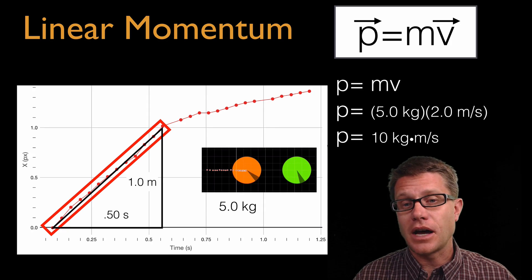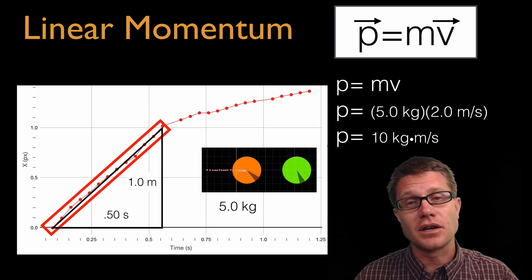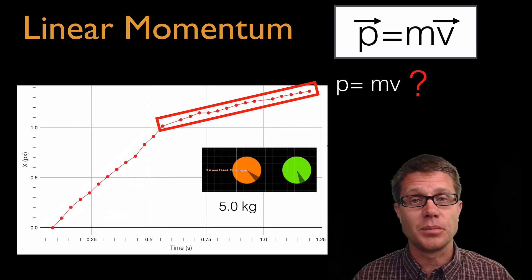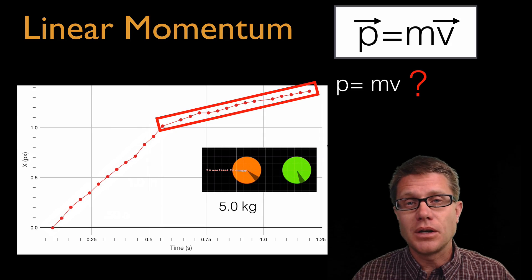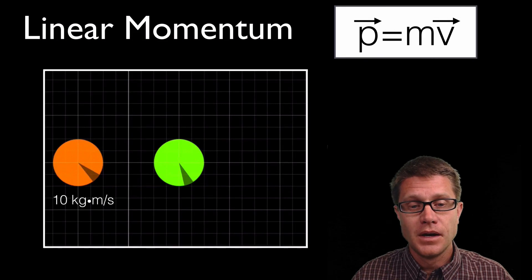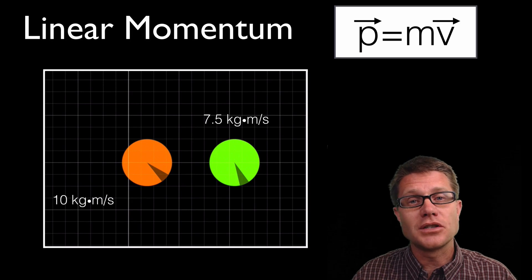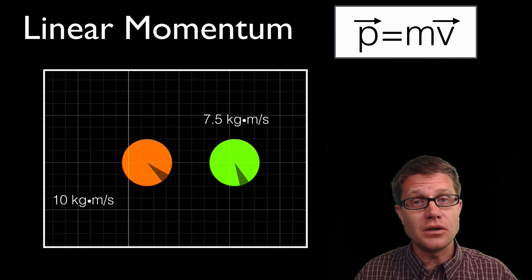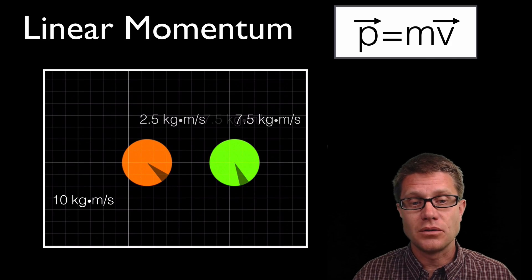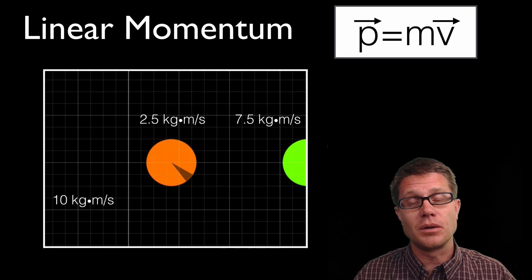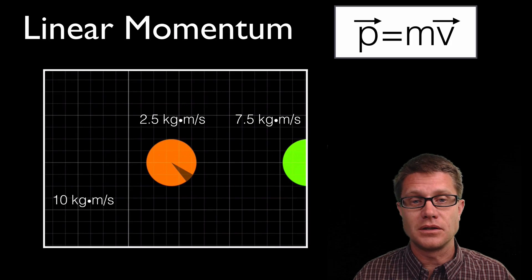You could figure out the orange sphere's momentum after the collision in one of two ways. You could calculate the slope of the line and multiply by the mass. But if you know about conservation of momentum, the green sphere now has 7.5 kilogram meters per second, so the orange sphere must have 2.5 kilogram meters per second after the collision — because the sum before the collision is equal to the sum after. That is why it is going about a third of the velocity of the green sphere.